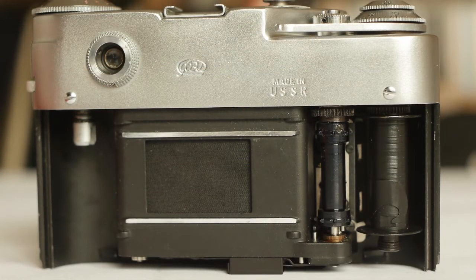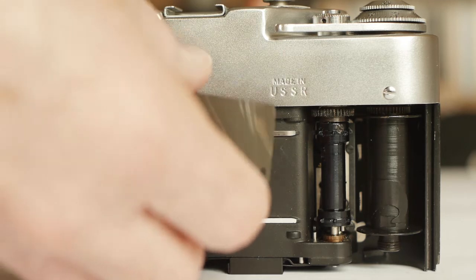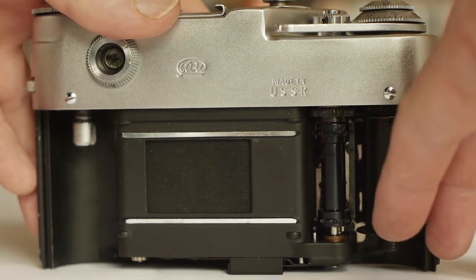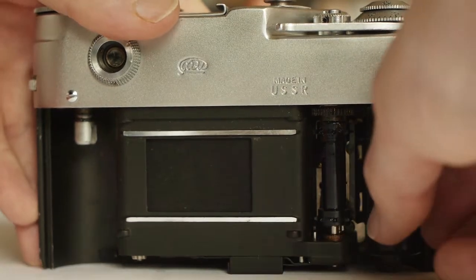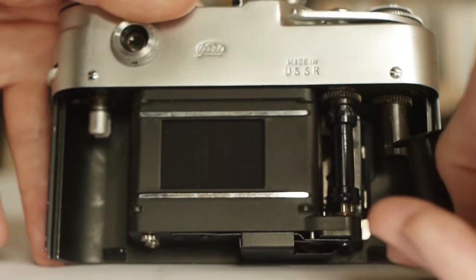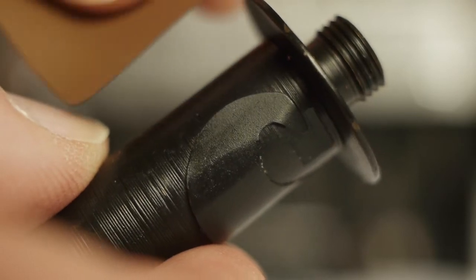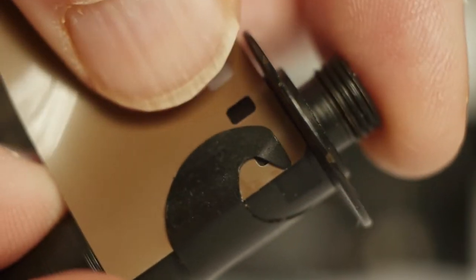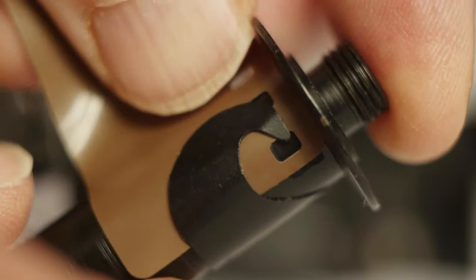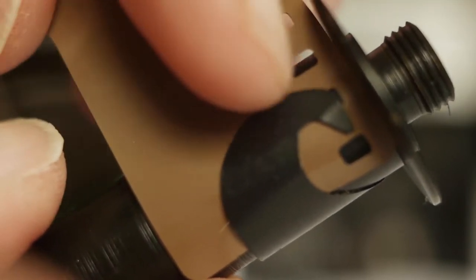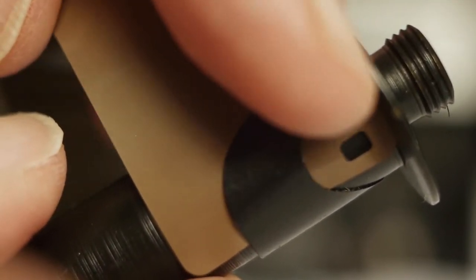To load film, we need to attach the leading edge of the film onto this take-up spool here. The spool is removable, so pull it downwards and it will just come out of the camera. Just like on the old Leicas, what we need to do is thread the leading edge of the film underneath this clip here. It does take a little bit of pressure. We'll feed it all the way around as far as it will go.